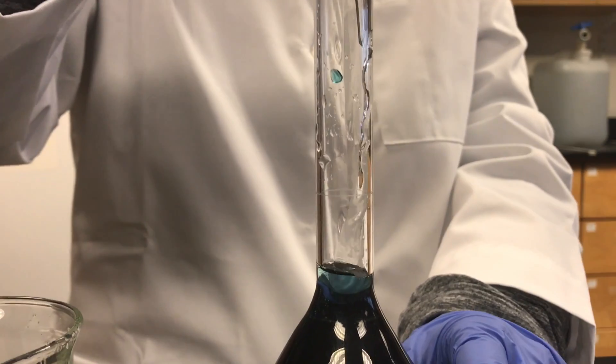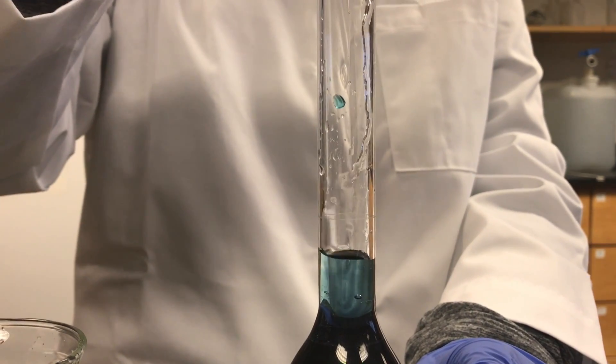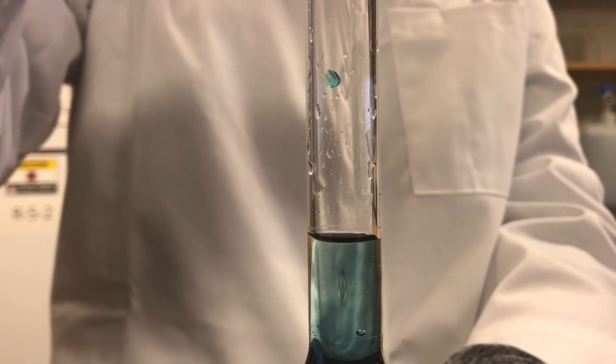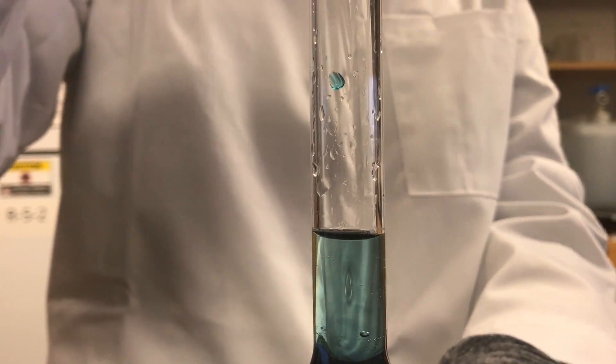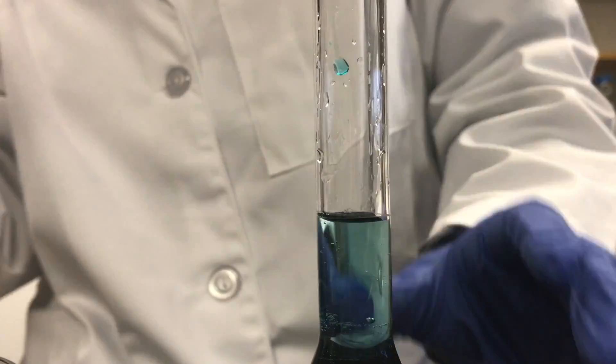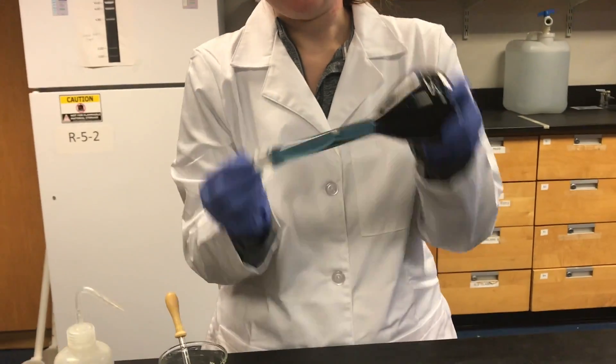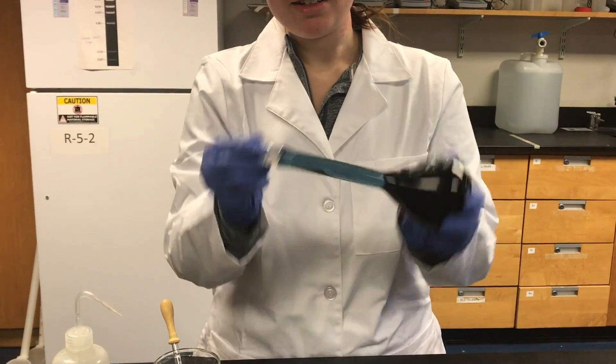When the liquid is close to the bottom of the stem, make sure to keep adding the DI water with a pasteur pipette only. This will ensure that you do not go over the line. The bottom of the meniscus should be right at the fill line. Finally, mix one last time, making sure the solution is homogeneous.